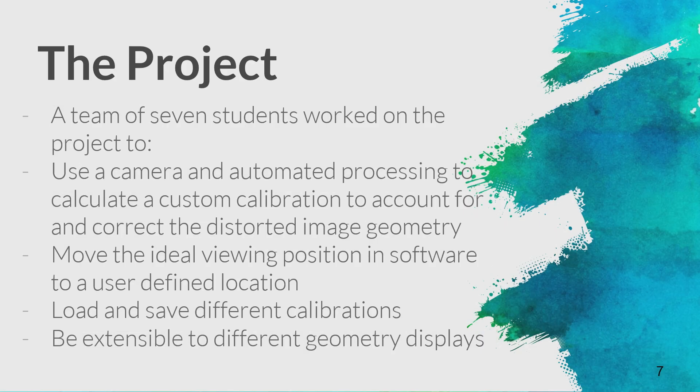The project involving seven students was to use a digital still camera and automated processing to calculate a custom calibration to account for and correct the distorted image geometry. It should also allow us to move the ideal viewing position to different points in front of the display, load and save different calibrations, and be extensible to different geometry and other types of projective displays.